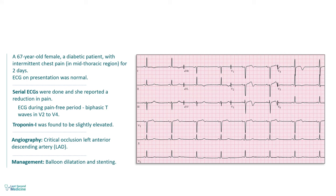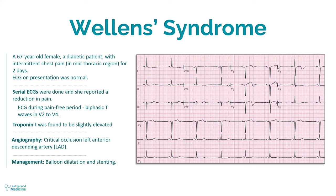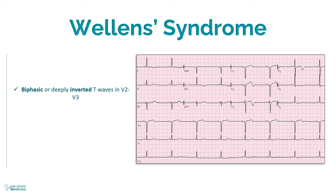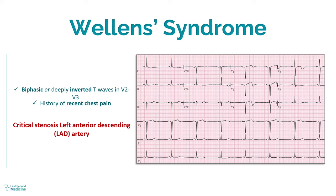This case scenario is typical of Wellens syndrome. Wellens syndrome is a clinical syndrome characterized by biphasic or deeply inverted T waves in V2 and V3, plus there is a history of recent chest pain which has now resolved. These features are highly specific for critical stenosis of the left anterior descending artery.